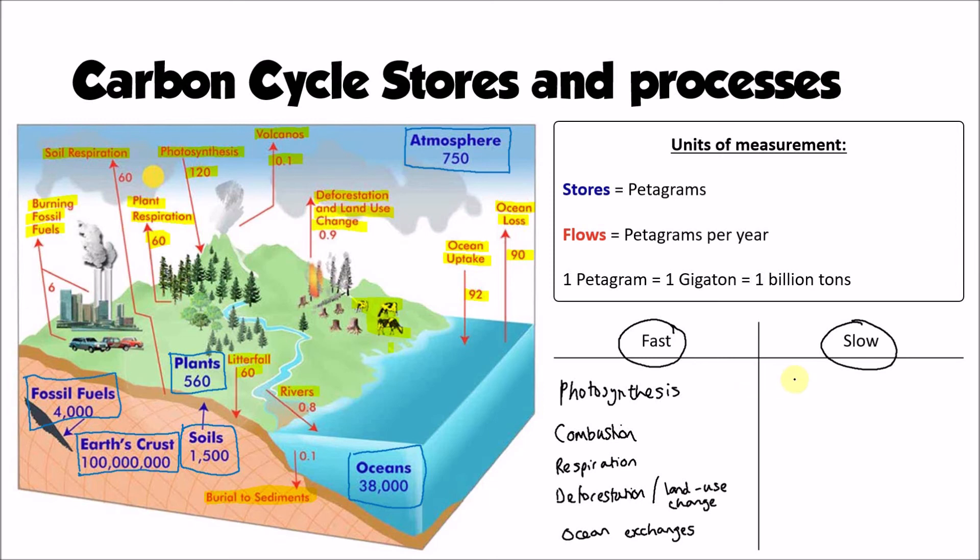The slow carbon cycle, on the other hand, is going to involve processes like weathering, which happens much more slowly. The burial and compaction of sediments. That process can take millions of years and lock carbon away for a very, very long time. And then connected to that, volcanic eruptions. Although those eruptions themselves might happen suddenly, the carbon that they are returning to the atmosphere has been locked away for a very, very long period of time.